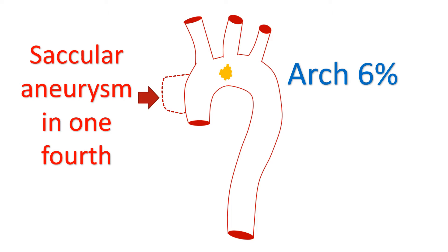About half of the ulcers are isolated without any associated intramural hematoma or saccular aneurysms. Nearly one fourth have associated saccular aneurysms, while about a seventh of them have associated intramural hematoma.